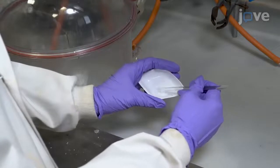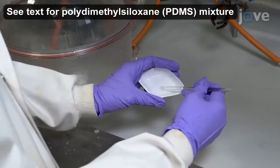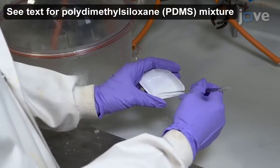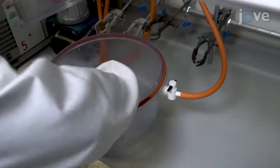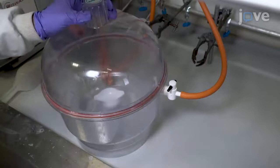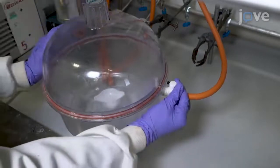To begin the procedure, thoroughly mix the components of the PDMS pre-polymer in a weighing boat. Degas the mixture in a vacuum desiccator for 20 minutes or until all gas bubbles have disappeared.